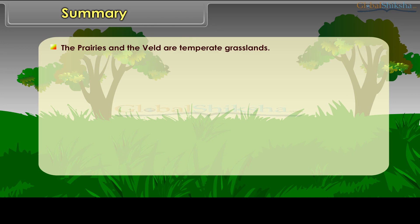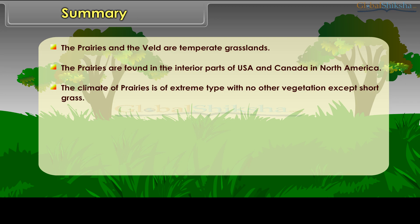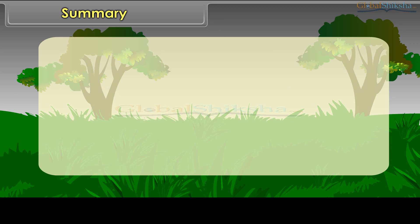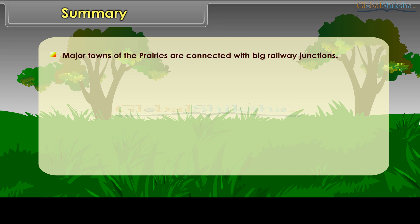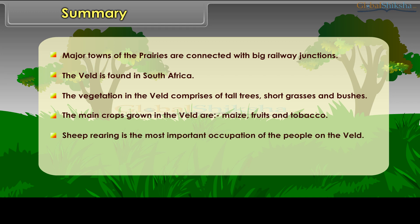Summary: The Prairies and the Veld are temperate grasslands. The Prairies are found in the interior parts of the USA and Canada, with an extreme climate and fertile soil making farming the main occupation. Wheat farming is the main agricultural activity, and major towns are connected by railway junctions. The Veld is found in South Africa, with vegetation comprising tall and short grasses and bushes. Main crops are maize, fruits, and tobacco, and sheep rearing is the most important occupation.